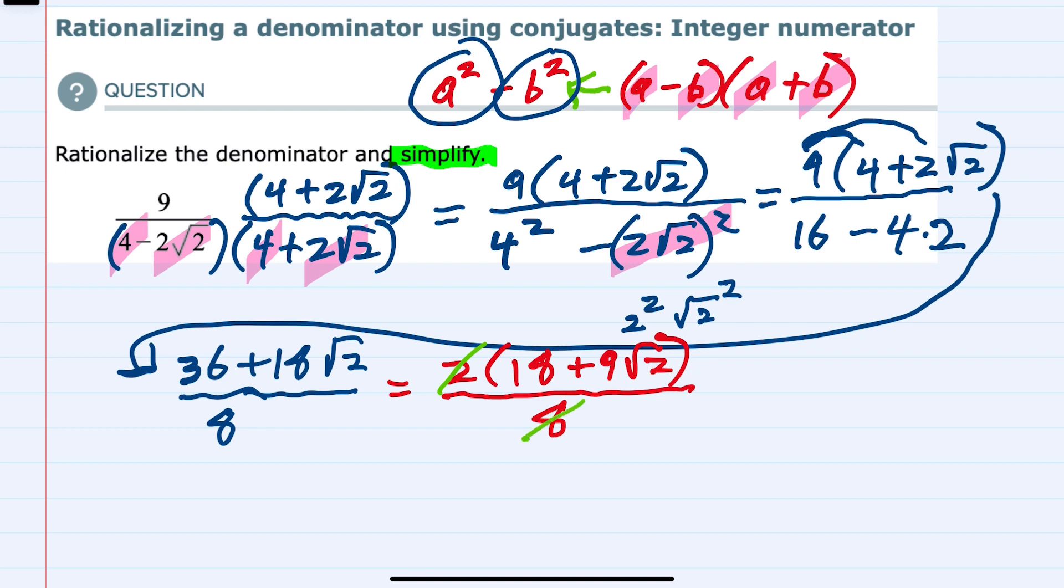2 goes into 8 four times. So having done that simplification, we're left with 18 plus 9 square roots of 2 over 4. We have rationalized and simplified this expression.